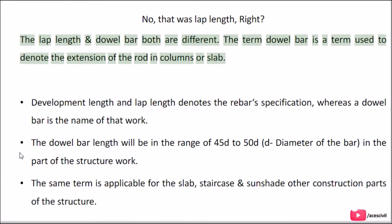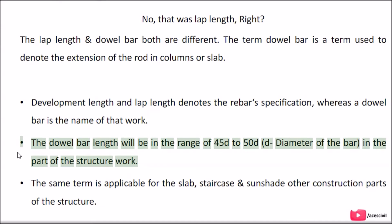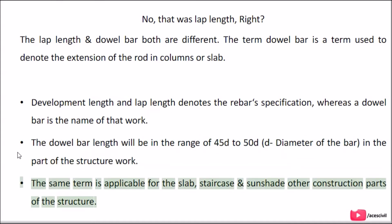The dowel bar is also used in the column. It is a term used to denote the extension of the rod in columns or slabs. Development length and lap length denote the rebar's specification, whereas dowel bar is the name of that work. The dowel bar length will be in the range of 45D to 50D (where D is the diameter of the bar) in the part of the structure. The same term is applicable for slabs, staircases, sunshades, and other construction parts of the structure.